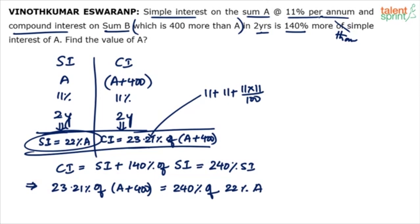I mean do the calculation. See 240 percent of 22 percentage or 22 percentage of 240 percentage. Do that calculation. So 240 percentage of 22 percentage is going to be 44 percentage plus 8.8 percentage. I think 52.8 percentage of A. 52.8 percentage of A. You are getting me.